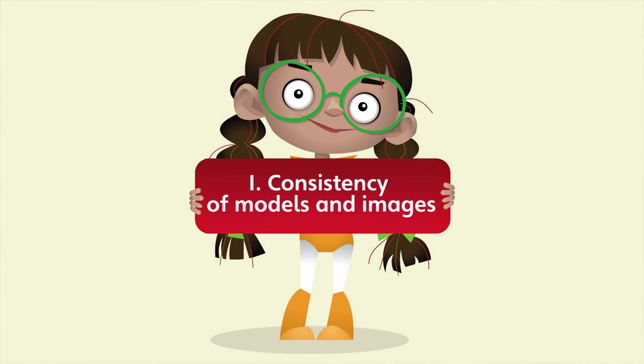So what are the five things that enable us to get children to develop mastery? The first thing is that we absolutely have to have a consistent approach to the development of models and images through the school. Taking a developmental approach to models and images is quite different from each teacher in each classroom having a particular model or image that they rather like using.